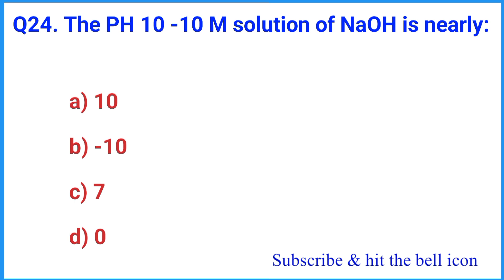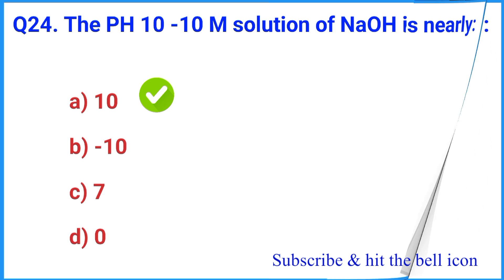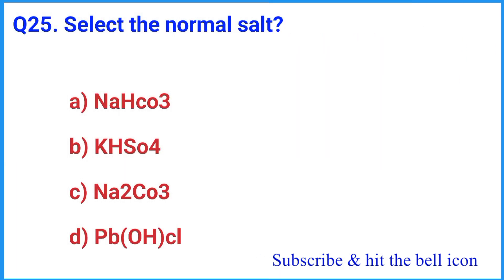Question number 24: The pH of a 10 raised to minus 10 mol solution of NaOH is nearly — the correct answer is option A. Question number 25, the last one: Select the normal salt — the correct answer is option C: Na2CO3.